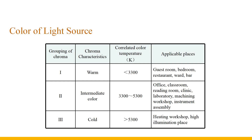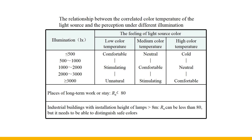The correlated color temperature of the light source affects the perception of warmth. When the correlated color temperature is greater than 5300 K, it produces a cool feeling; when it is less than 3300 K, it produces a warm feeling. Cool colors are generally used in high illumination environments and hot workshops, warm colors in residential places, and intermediate colors in general public buildings. The subjective perception produced by the light source color is related to illuminance: low illumination suits low color temperature, and high illumination suits high color temperature. In places where people work or stay for a long time, the general color rendering index (Ra) of the light source should not be less than 80. For industrial buildings with lamp installation heights greater than 8 meters, Ra can be lower than 80, but must allow safety colors to be distinguished.